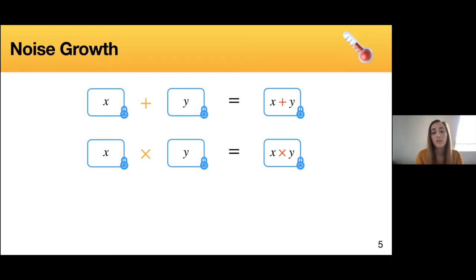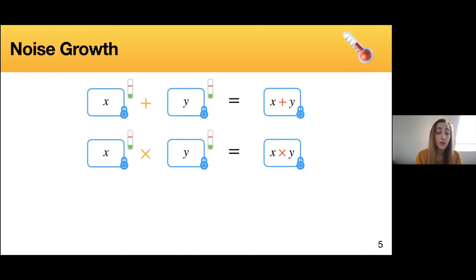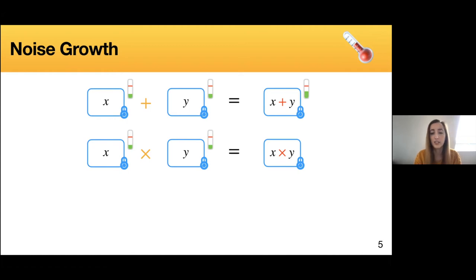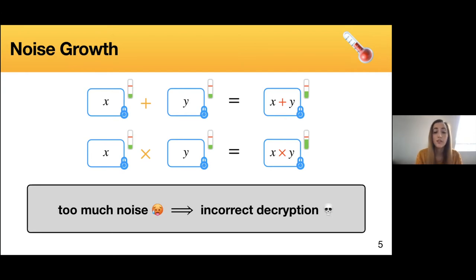The most annoying part in homomorphic encryption is what we call the noise growth. When we encrypt, we add some little amount of noise — this little randomness measured in the slides with a thermometer. When we start computing homomorphic operations, the noise grows. For additions and linear combinations, the noise grows a little bit. However, for multiplications and non-linear operations, the noise grows faster. If the noise reaches a certain limit, indicated by a horizontal red line in the thermometers, we risk having an incorrect decryption.